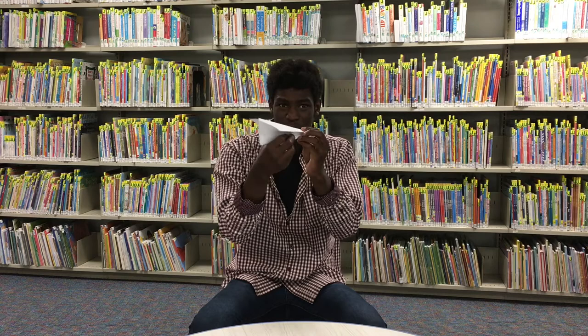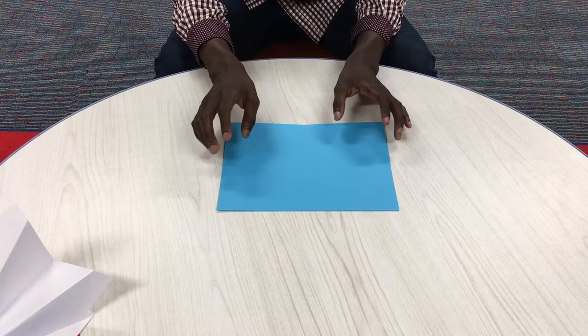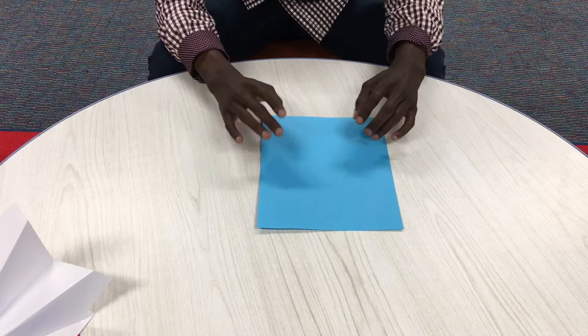This paper airplane make is called the V-Wing. It looks very simple, looks small, but it is very compact and very smooth flying. For this make, the V-Wing, instead of using it horizontally flat, we're going to do it vertically.